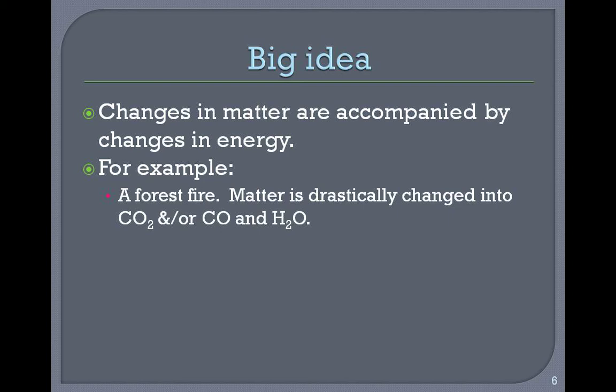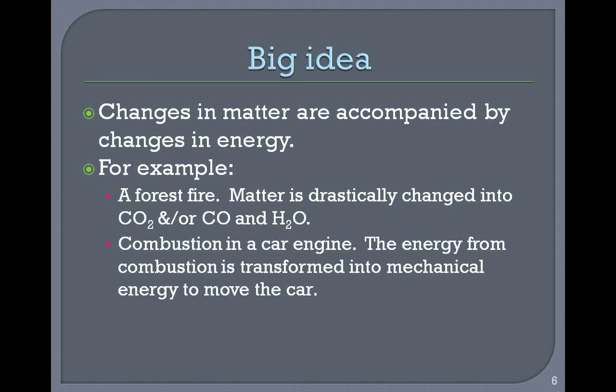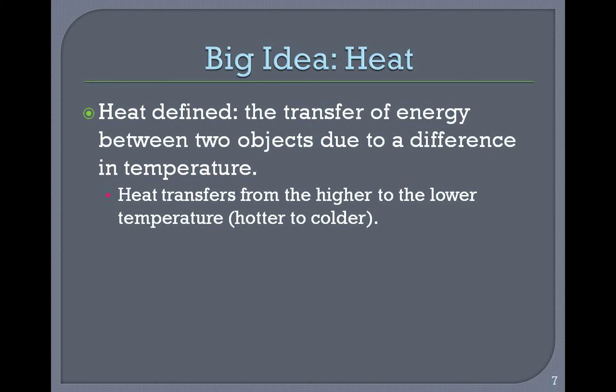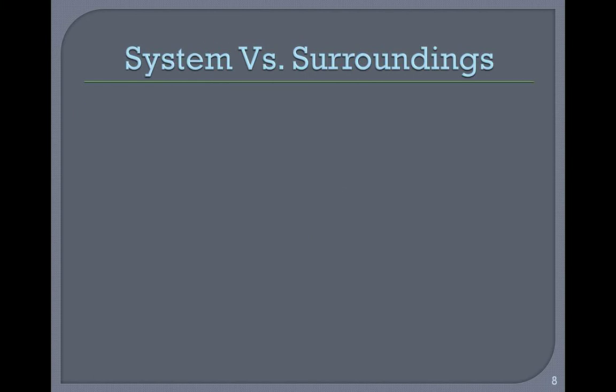For example, a forest fire — matter is drastically changed into carbon dioxide and/or carbon monoxide and H₂O. Combustion in a car engine: the energy from combustion is transformed into mechanical energy to move the car. A big idea about heat: heat is the transfer of energy between two objects due to a difference in temperature. Heat transfers from the higher to the lower temperature — from the hot to the cold.